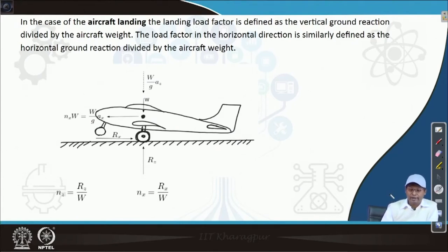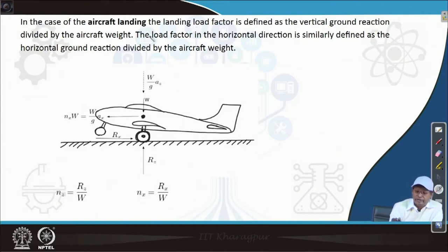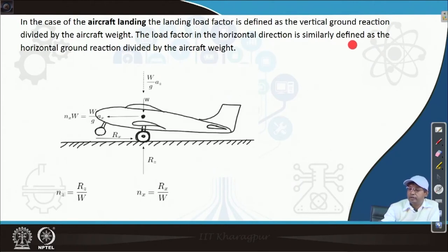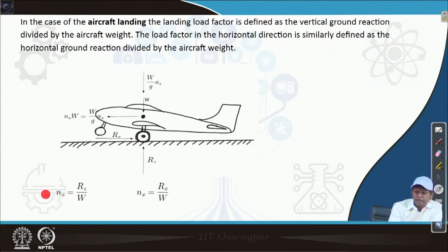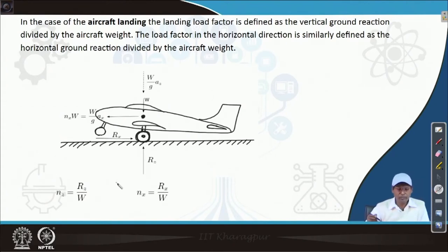In the case of aircraft landing, the landing load factor is defined as the vertical ground reaction divided by the aircraft weight. The load factor in the horizontal direction is similarly defined as the horizontal ground reaction divided by the aircraft weight. Nz corresponds to the vertical reaction and Nx to the horizontal reaction.